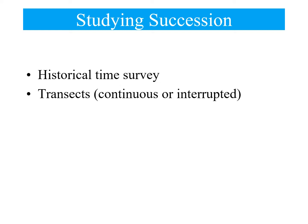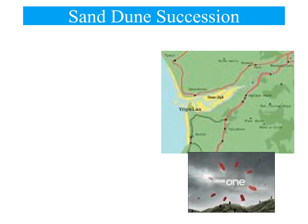We can study succession in two different ways: using historical time surveys, such as the Mount St. Helens example, or by doing transects across an area where natural succession is occurring. An area like sand dunes is suitable for transect-based study.